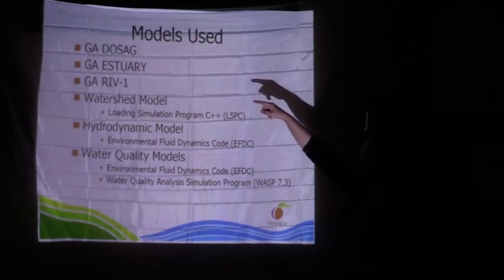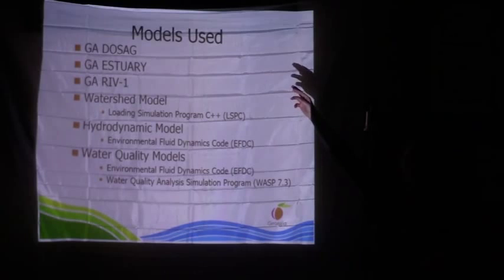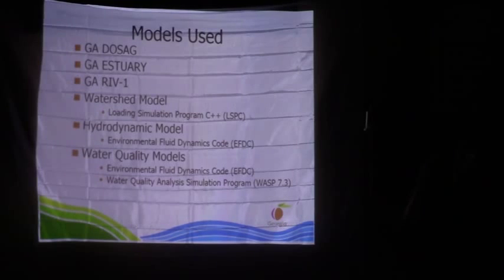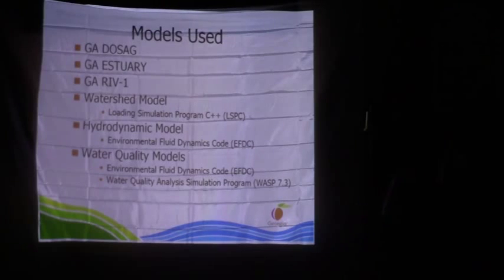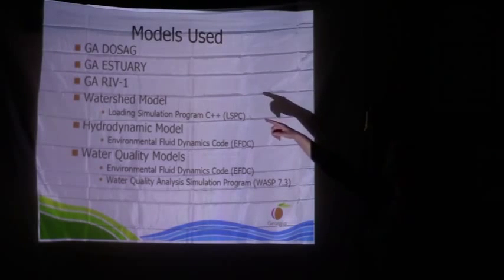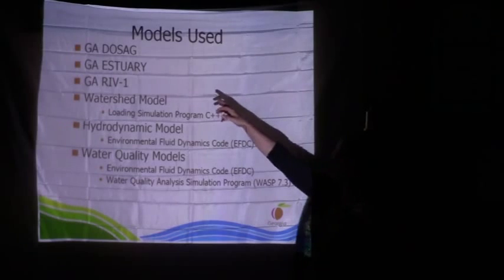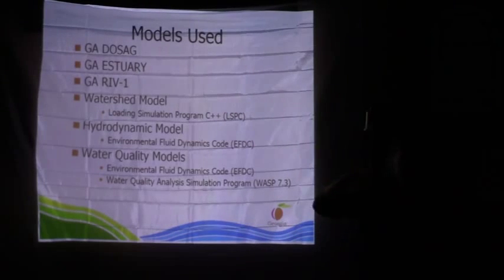Georgia DO-SEC is our workhorse — a steady-state model we use for freshwater streams under critical conditions, specifically low flow, or 7Q10: the lowest flow over a seven-day period with a recurrence interval of every 10 years, so it happens 10% of the time. Georgia Estuary is a model we use along the coast — it's a mid-tide, steady-state model.